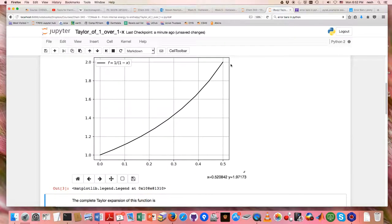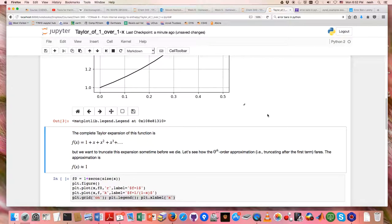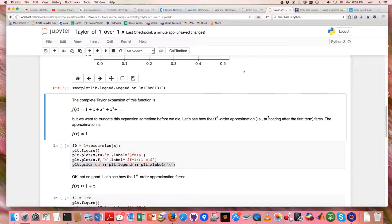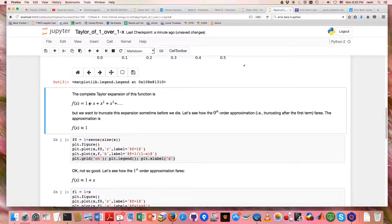And it's this increasing function. So that's what we want to try to approximate with the Taylor expansion. So the complete Taylor expansion of that function turns out to be really simple. It's just 1 plus x plus x squared and so on.